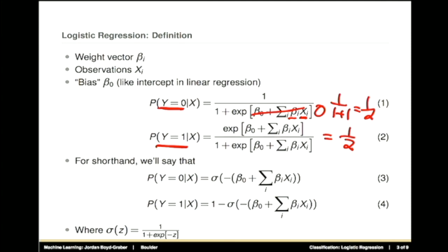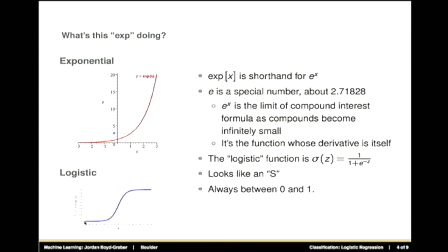For a shorthand, so we can avoid writing one over one plus yada yada, we'll often use the logistic function by itself, symbolized by σ. That's the definition of σ down there. So what the heck is this σ logistic thing that appears in the name of logistic regression? It's this curve down here, this S-shaped curve. This is nice because as your inputs to this function get really small, you get numbers that are basically zero. And as your inputs get really big, you get outputs that are basically one. The other nice thing about this is it has a very simple derivative, as you'll see in your homework.